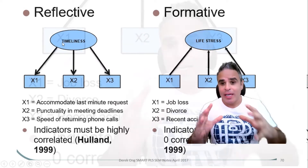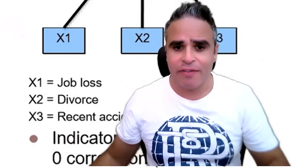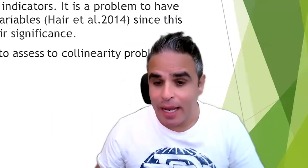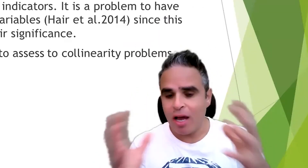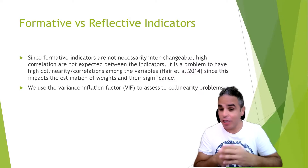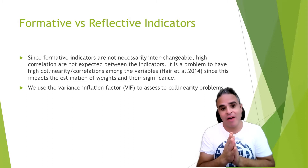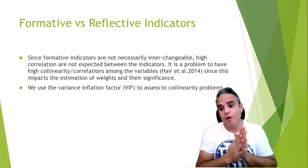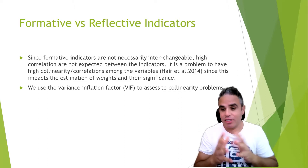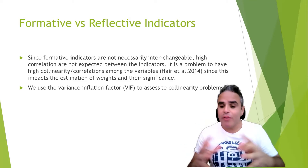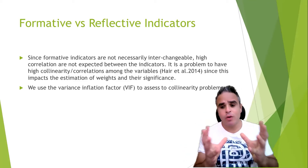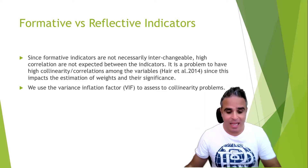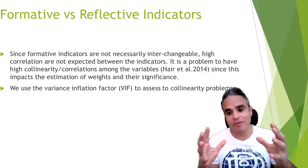That's just an overview about formative and reflective indicators. Formative indicators don't have to be correlated at all — high correlation is not expected and is actually a problem, because high correlation may impact the estimation of the weights or loadings and their significance. The first step to validate formative indicators in SmartPLS is checking for VIF.